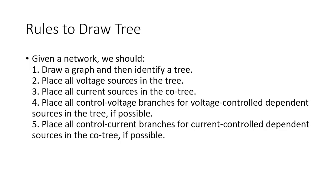The first rule: we need to place all voltage sources in a tree. So from the graph I'm going to draw a tree. If we have n nodes totally, we will have n minus 1 twigs — twigs are the branches of a tree. Among these n minus 1 branches, I need to make sure all the voltage sources are included in the tree.